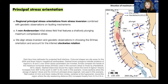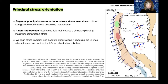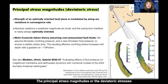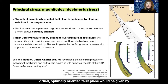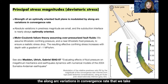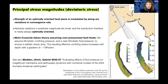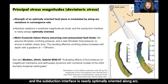We see in blue the SH-max trends in this study compared to those inferred by Hardebeck in 2012, showing a rotation of the SH-max direction along arc. The deviatoric stresses are modulated and not constant, illustrated by the R ratio representing the relative strength of the megathrust and splay faults. The strength of a virtual optimally oriented fault plane R0 ranges from 0.45 to 0.65, and this modulation resembles the long-arc variations in convergence rate from Euler pole inferences. The absolute variations in pre-stress magnitude are small, and the subduction interface is nearly always optimally oriented.